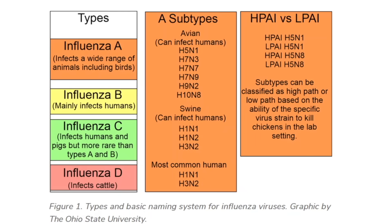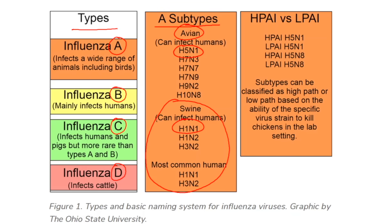Influenza in general is divided into types: type A, type B, type C, and type D. This bird flu we're talking about, H5N1, is a subtype of type A, but so are a bunch of other influenza viruses we get exposed to all the time. There are avian types like H5N1, H7N3, etc., and then there's H1N1 that we sometimes see during flu season. These are all type A.